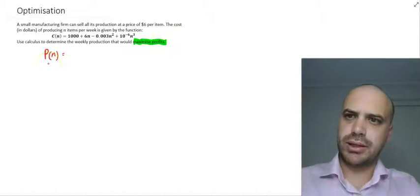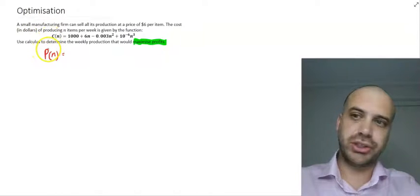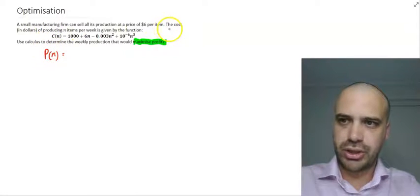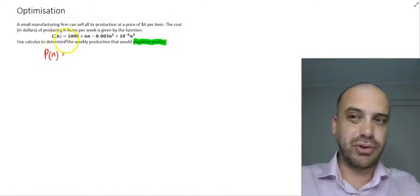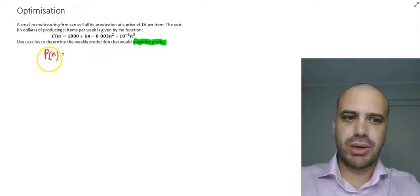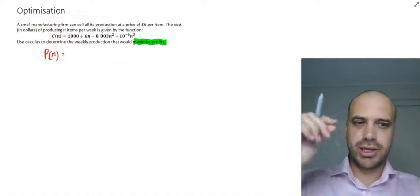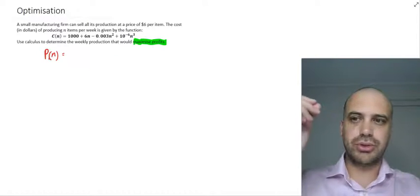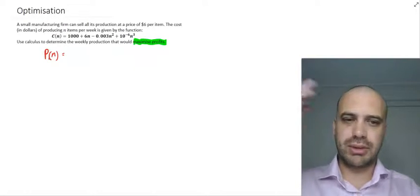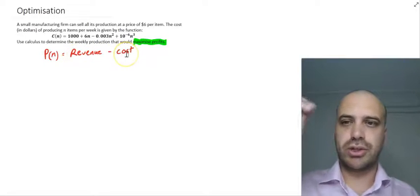Now the problem is that when I look at the question itself, I don't have a profit function. I find out that actually I've got a cost function, a cost with respect to the number of items. Think about what profit is. The money coming in minus the money coming out minus the costs will be equal to the profit. This is something that you can learn: profit is equal to revenue minus cost.